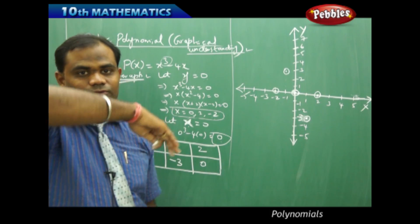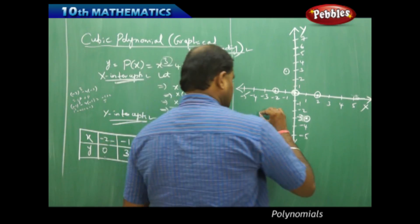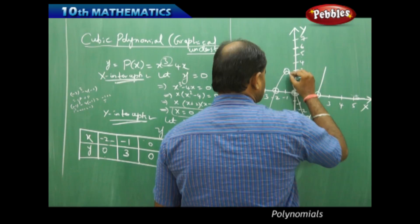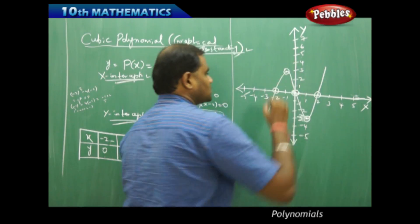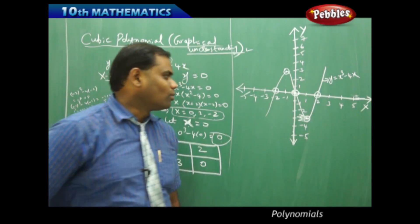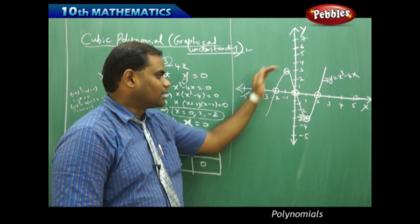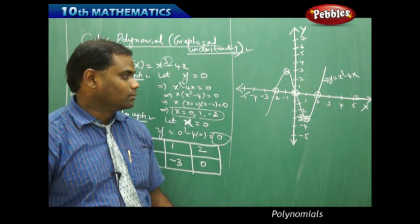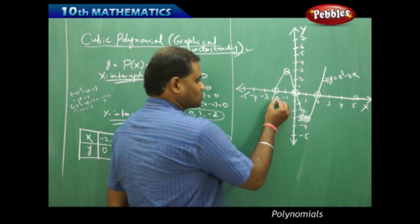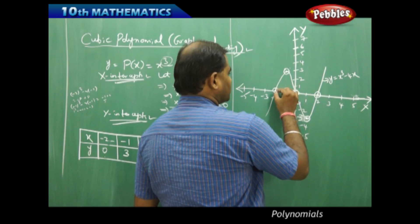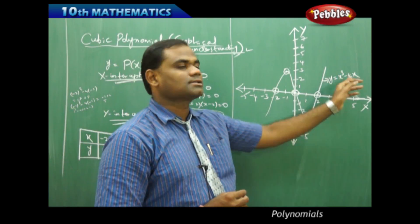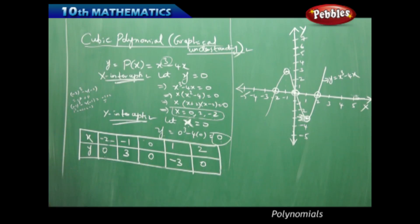I join the points with a smooth freehand curve. The curve comes up, comes down, touches, goes up — and this is how the cubic polynomial looks. The cubic polynomial y equals x cubed minus 4x has the shape of a zigzag crest and trough. The graph cuts the x-axis at 3 points: minus 2, 0, and 2. Since the y-intercept is 0, the graph passes through the origin.